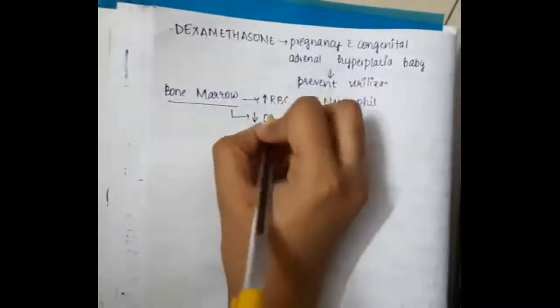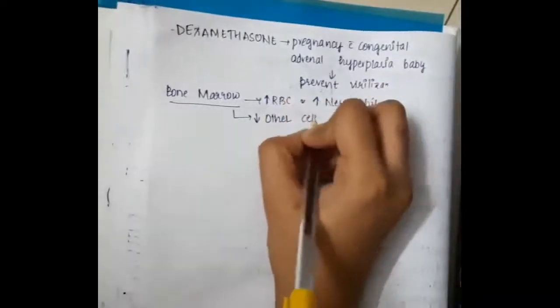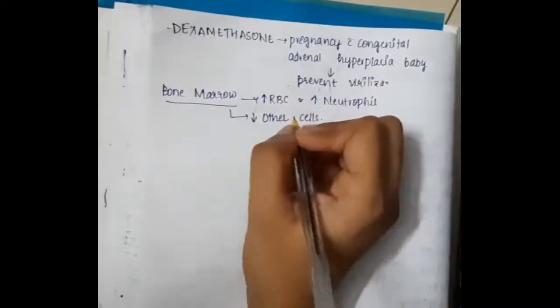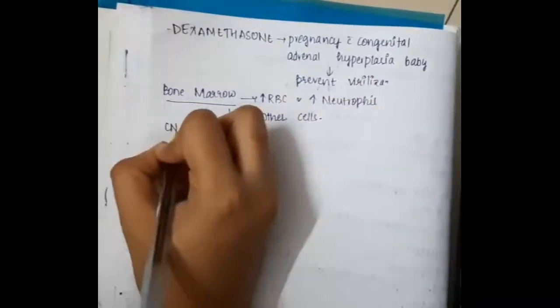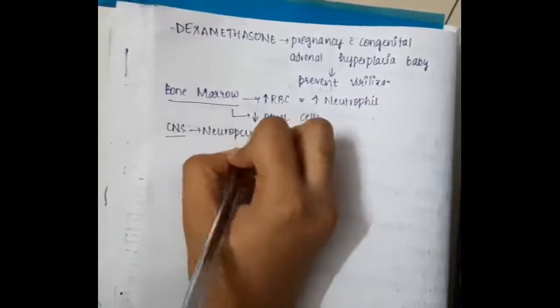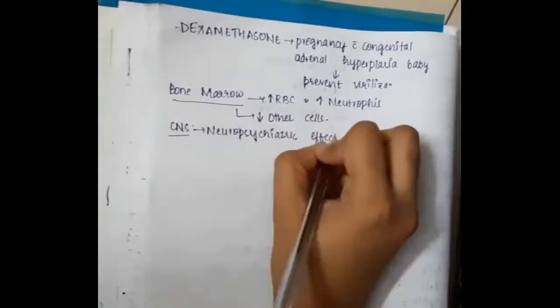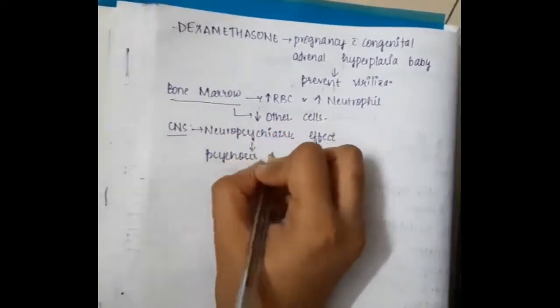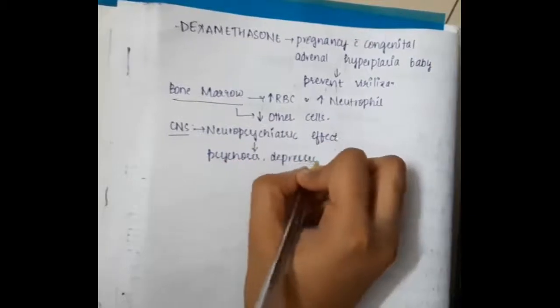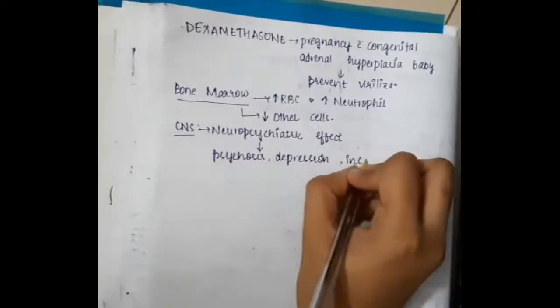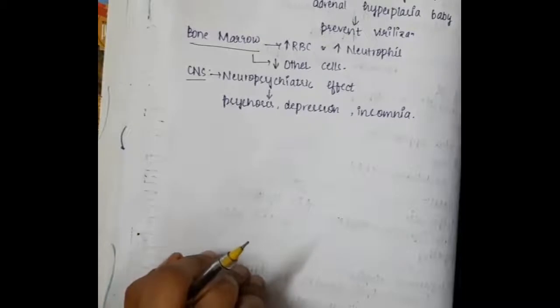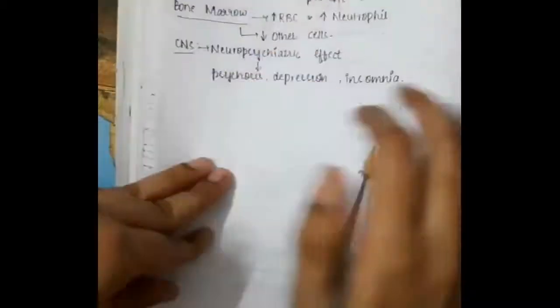In the bone marrow, steroids increase red blood cells and neutrophils but decrease other cells. In the central nervous system, neuropsychiatric effects like psychosis, depression, and insomnia are seen.